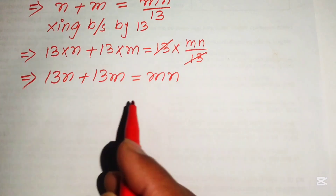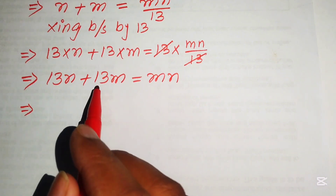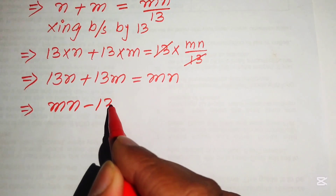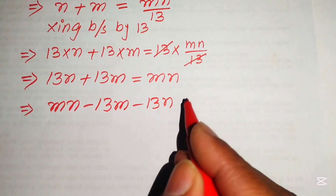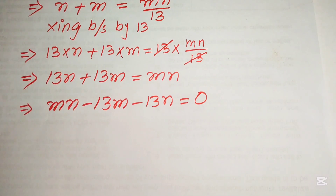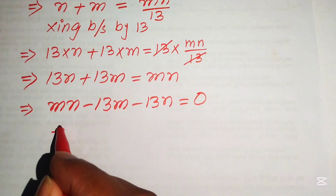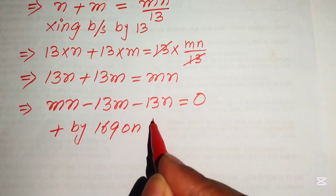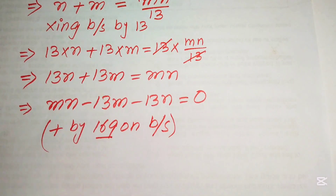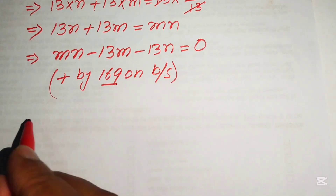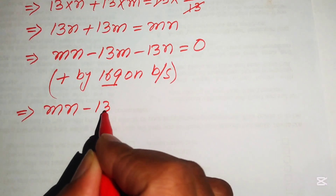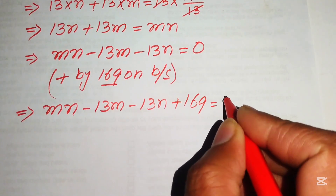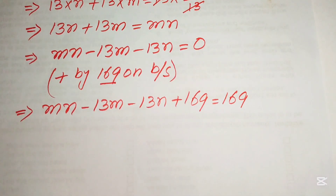We move 13n and 13m to the right-hand side, giving mn minus 13m minus 13n equals 0. Then we add 169 to both sides, so we have mn minus 13m minus 13n plus 169 equals 169.